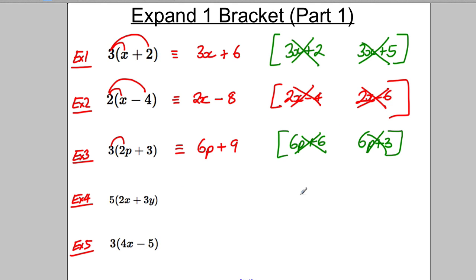Okay, and now I'm not going to continue showing you the wrong answers. I'll just show you the right ones. 5 multiplied by 2x is 10x. Positive 5 multiplied by positive 3y is positive 15y.